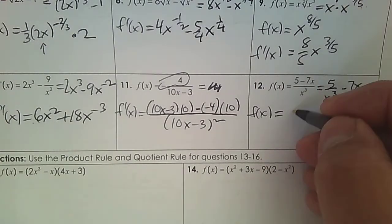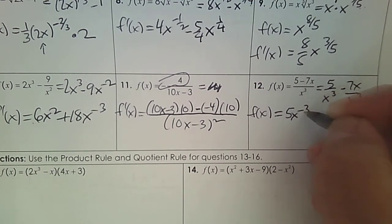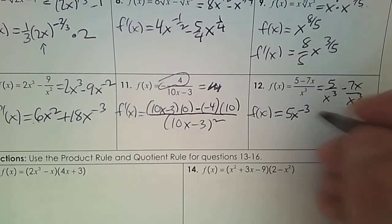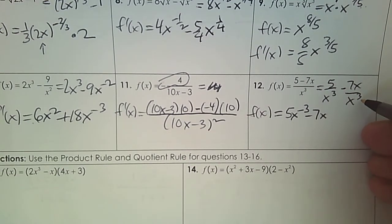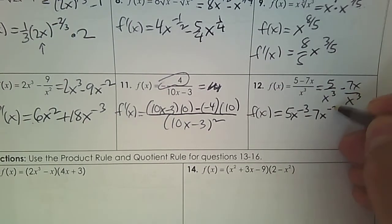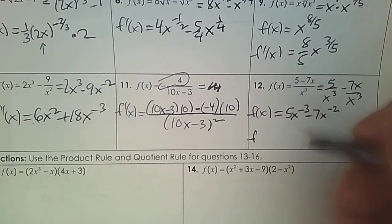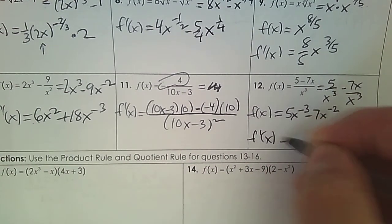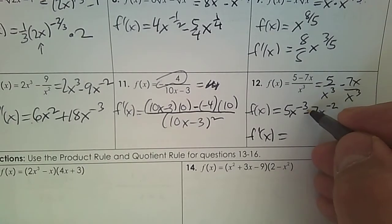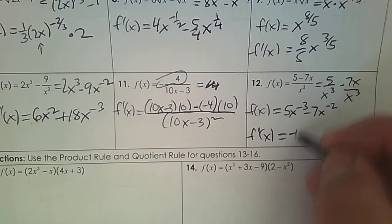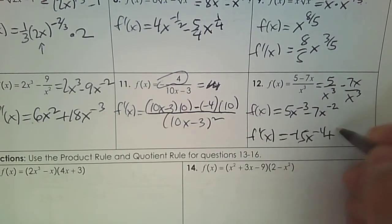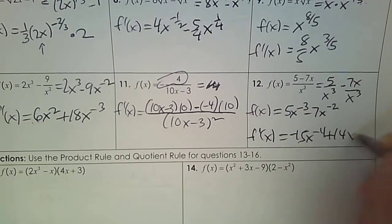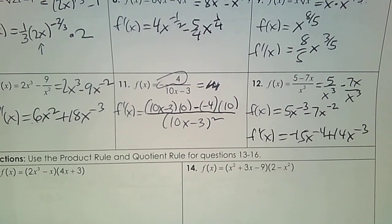This one I can write with 5 over x cubed minus 7x over x cubed. Then I can simplify it, then I can take the derivative. So 5 over x cubed is 5x to the negative 3, minus 7x — subtract 1, take away 3, that's negative 2. Exponent rules from middle school. Take the derivative: negative 3 times 5, subtract 1. Negative times a negative is plus 14, subtract 1, and it's done.